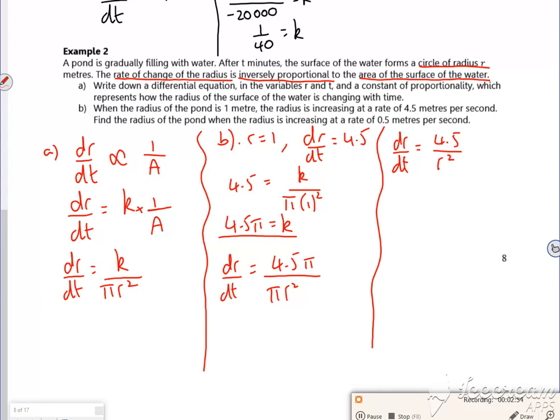Now I've done that, so I've found the K value and put it back into my equation using this information here. So then it says find the radius of the pond when it's increasing at a rate of 0.5. So I'm saying here that my DR by DT is 0.5. So 0.5 is 4.5 over R squared. Do some rearranging. R squared is 9. R is plus or minus 3.